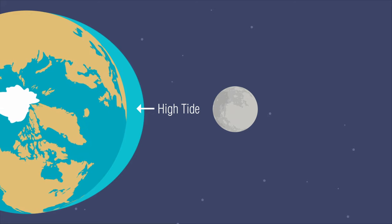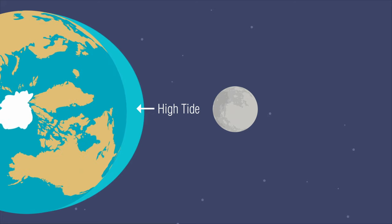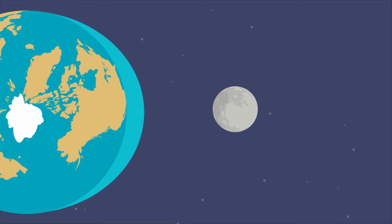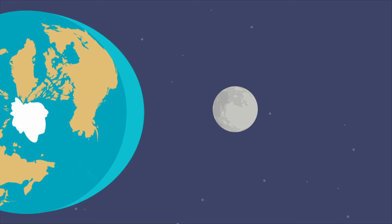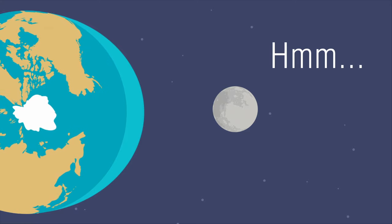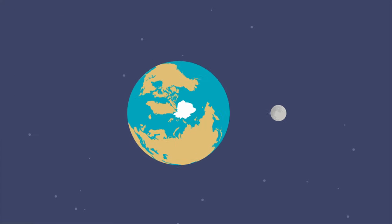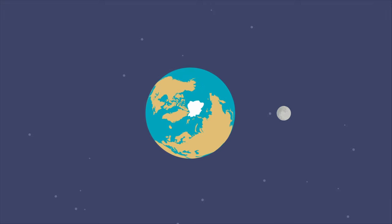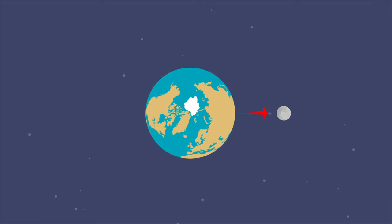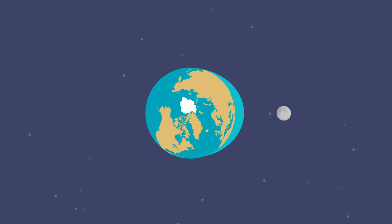As your part of Earth rotates into this bulge of water, you might experience a high tide. That explains the first high tide each day. But what explains the second high tide? This is where things get a little tricky. As we mentioned earlier, when the moon's gravity pulls on one side of Earth, it creates a tidal bulge toward the moon.